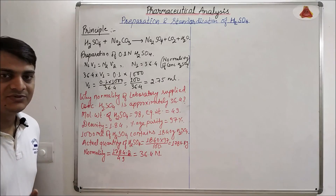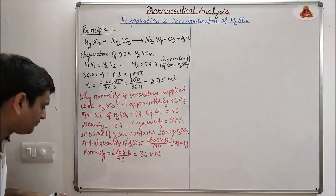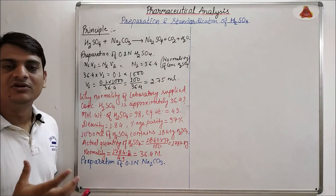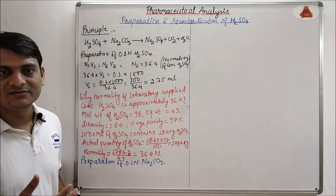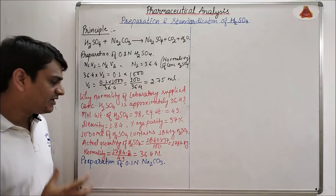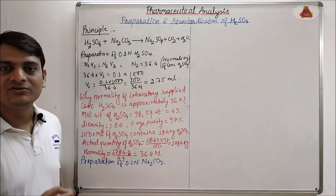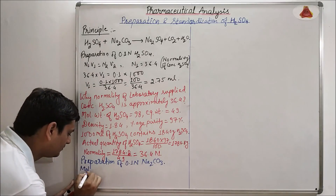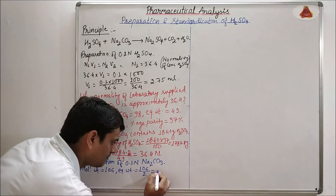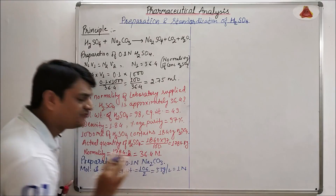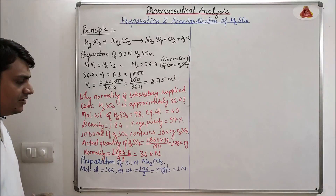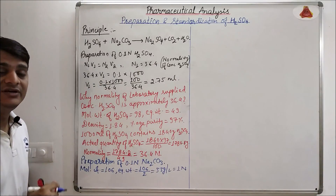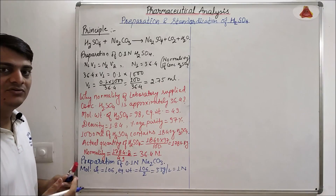Now coming to the preparation of 0.1 normal Na2CO3. The molecular weight of Na2CO3 is 106 and it contains two replaceable ions, so the equivalent weight = 106 / 2 = 53 g per liter for 1 normal. For 0.1 normal, this 53 is divided by 10, giving 5.3 g per liter = 0.1 normal.